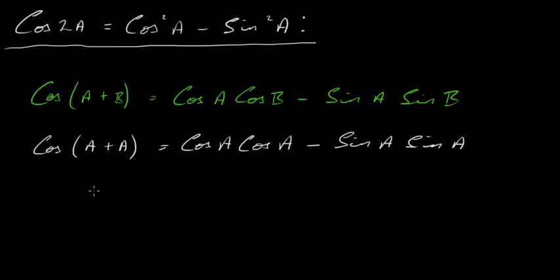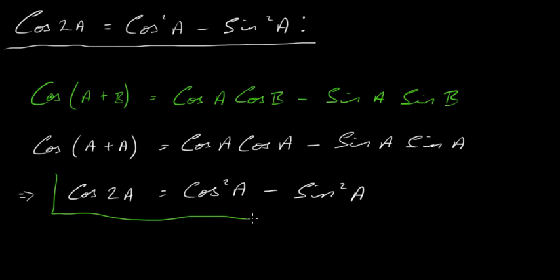Here on the left-hand side, we end up with cos 2a, which is exactly what we want. That's equal to cos a times cos a, that's cos squared a. Here, sine a times sine a, that gives us sine squared a. And that is it. That's exactly what we were asked to derive. Cos 2a is equal to cos squared a minus sine squared a.